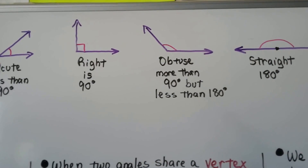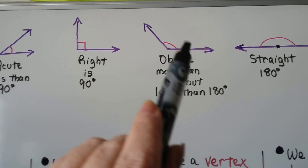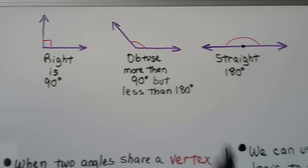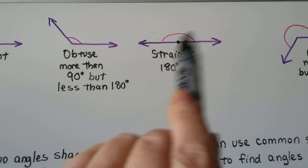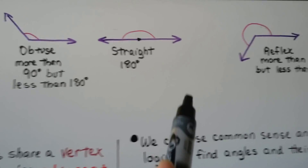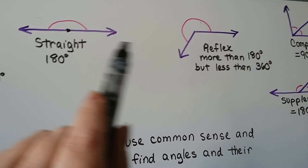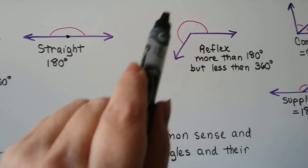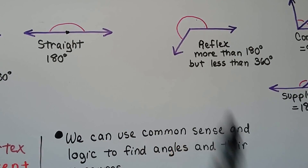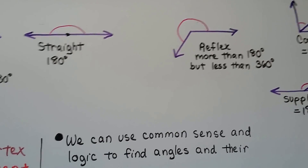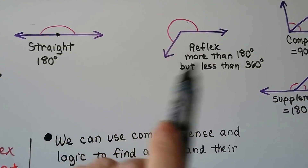I remember these because acute is cute and little, and obtuse starts with OB — like obese — so it's big. A straight angle is 180 degrees, like a straight line. A reflex angle is more than 180 degrees — it opened so much it began to wrap around again — but it's less than 360 degrees. 360 degrees would be a full circle.